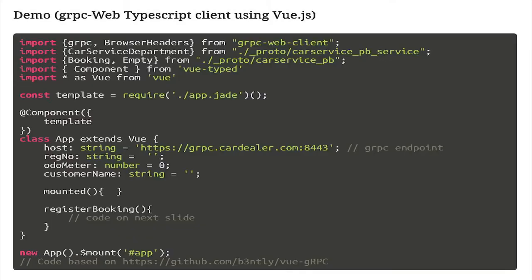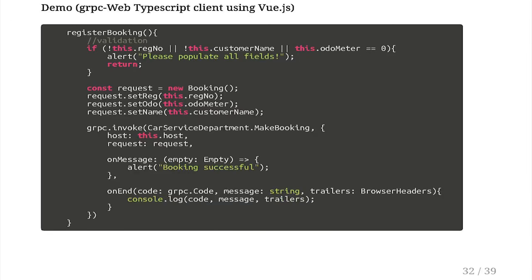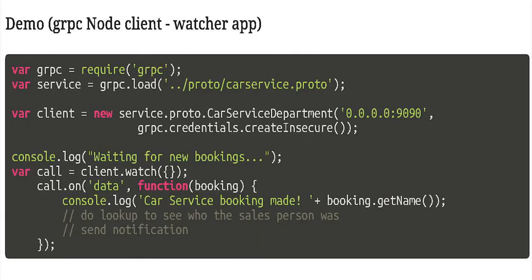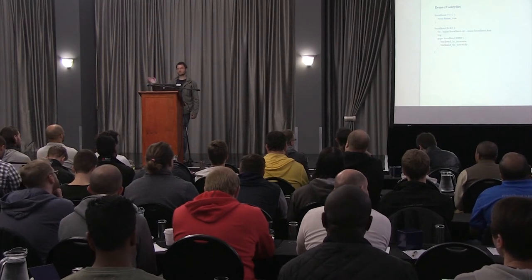The service implementation — I've added an anonymous lambda function just to fit on one slide. Basically it will receive the booking, and using the events package from NPM, it will emit the new booking to the watch function and then send it over the stream. The watch function will send it over the stream to whoever is watching. The TypeScript client — I've decided to use Vue.js and imported vue-types to call TypeScript from Vue. We specify a couple of parameters and then register booking does some validation, sets up the request, and does the call. The watch app opens a request and waits for any messages sent over the stream. The Caddy config file serves the Vue page on one port and proxies the gRPC calls on another port.